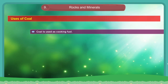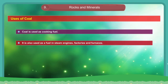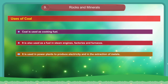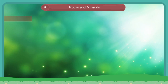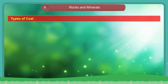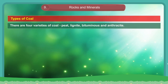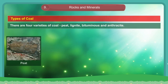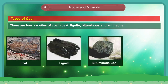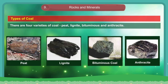Uses of Coal. Coal is used as cooking fuel. It is used as a fuel in steam engines, factories and furnaces. It is used in power plants to produce electricity and in the extraction of metals. Types of Coal. There are four varieties of coal: peat, lignite, bituminous and anthracite.